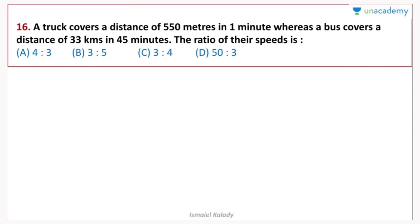Next question: A truck covers a distance of 550 meters in 1 minute, whereas a bus covers a distance of 33 kilometers in 45 minutes. The ratio of their speeds is to be found. The speed is not in the same unit — the truck is given in meters per minute and the bus in km per 45 minutes.